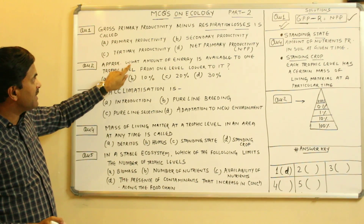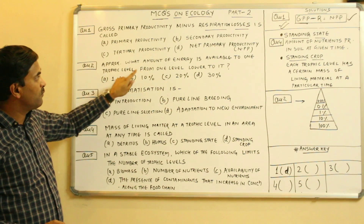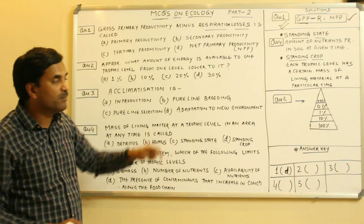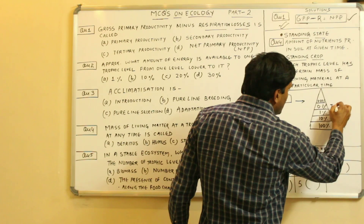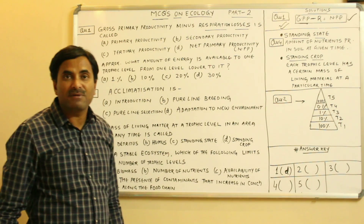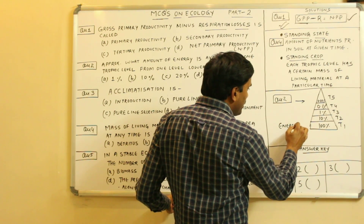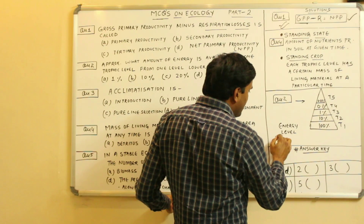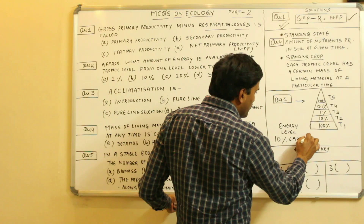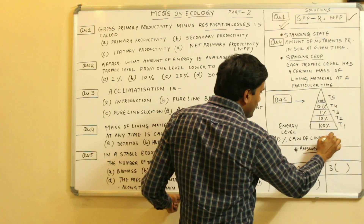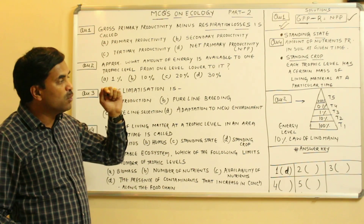The second question: approximately what amount of energy is available to one trophic level from the level lower to it? We know these trophic levels — T1, T2, T3, T4, T5. I have written the energy levels. From NCERT, we study Lindeman's 10% law, which states that only 10% of the energy from the lower trophic level goes to the upper trophic level.